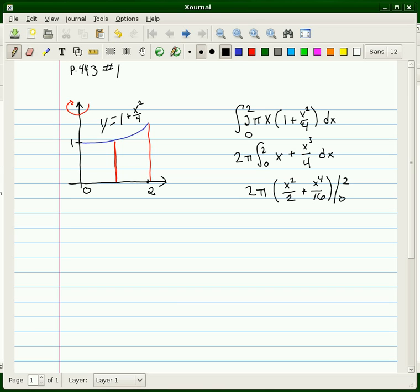Plugging in 0 gives 0, so we just plug in 2. That's 2π times 4 over 2 plus 16 over 16, which equals 2π times 2 plus 1, which equals 6π.